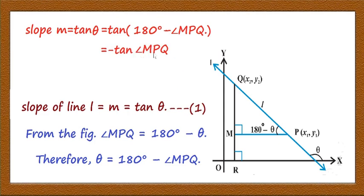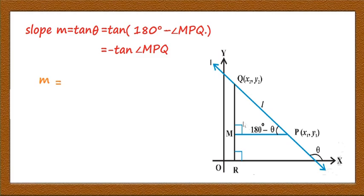Therefore, m = -tan(MPQ), where MPQ is an angle of triangle QMP. So m = -(opposite side / adjacent side) = -(MQ / MP). Now, MQ = y2 - y1, because MR = y1 and QR = y2. Whereas MP = x1 - x2, because the coordinate of P is x1, and x1 is greater than x2.